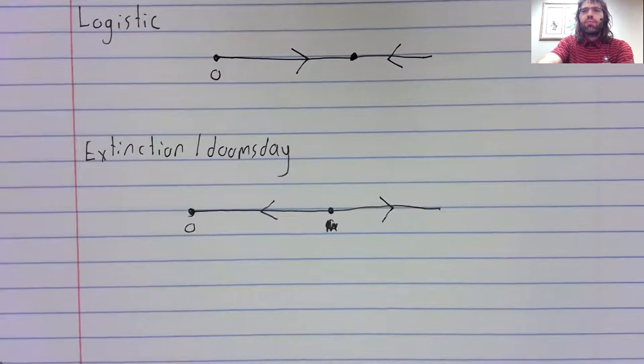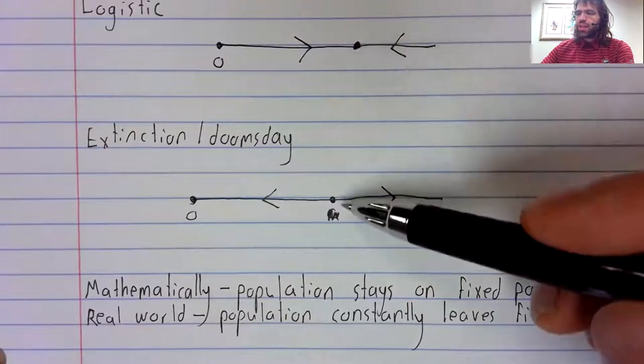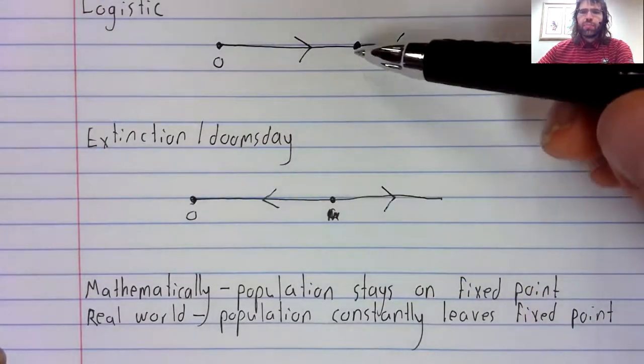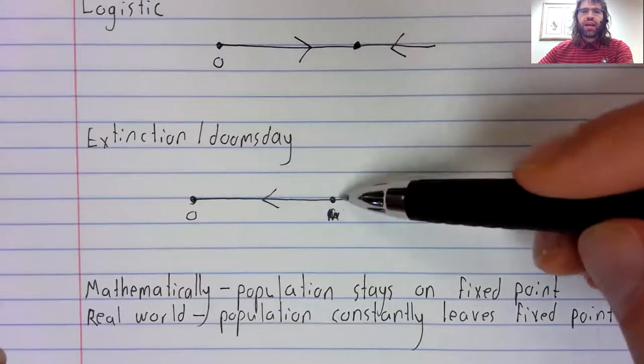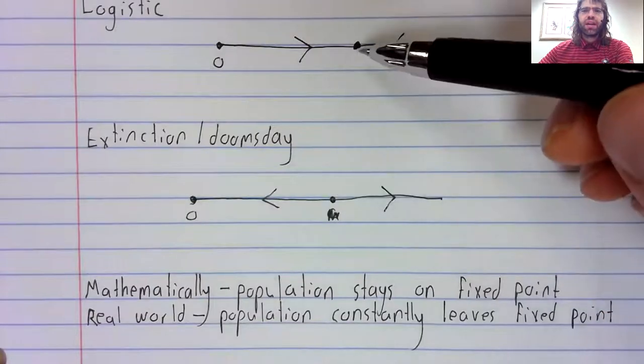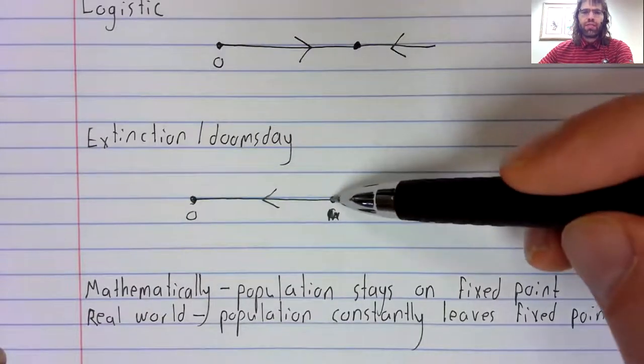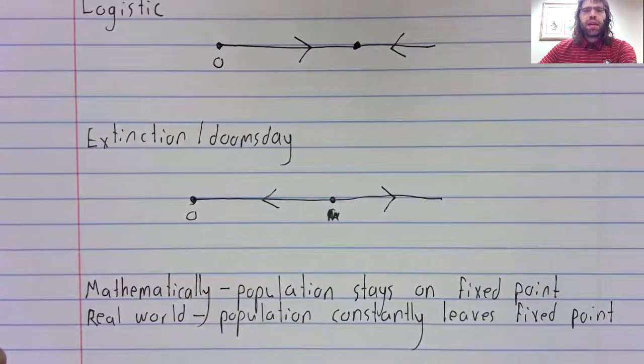Mathematically, in both of these cases, if the population is equal to this value, the population stays at that value forever. That's what happens mathematically. It's not what happens in the real world.